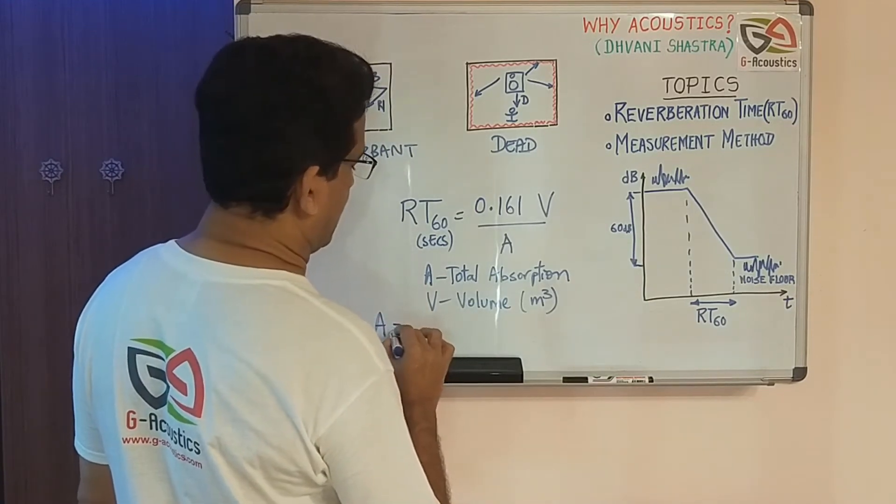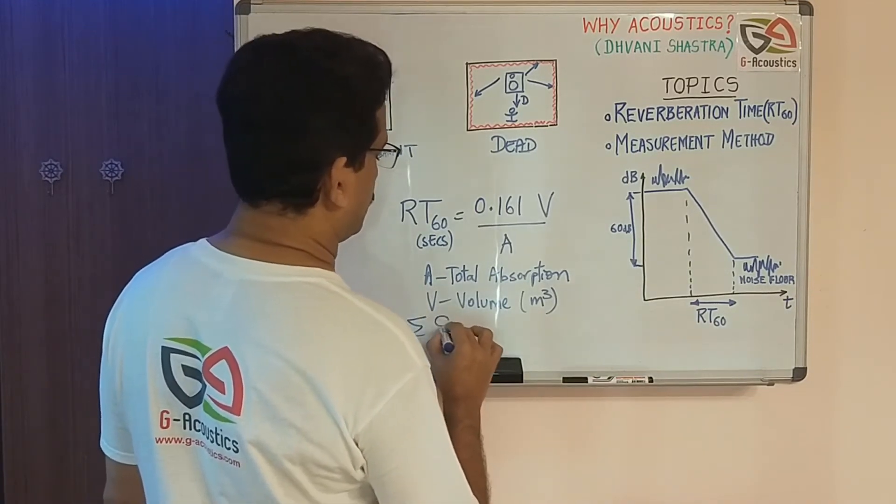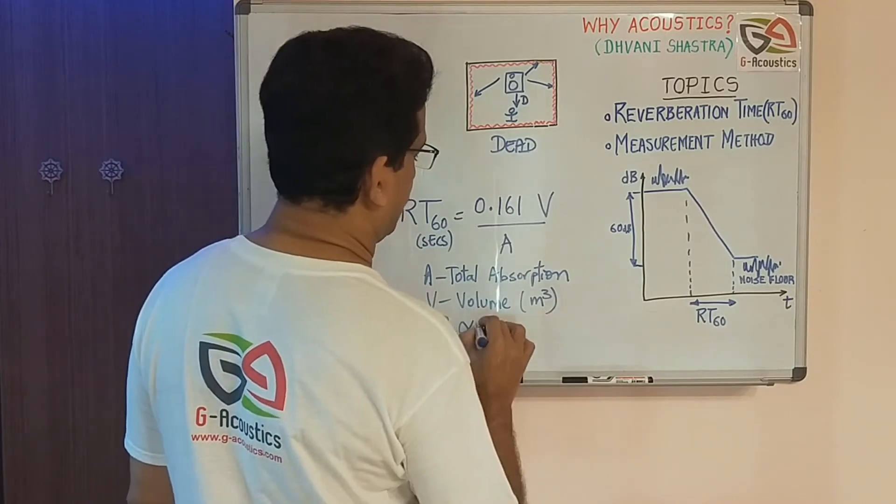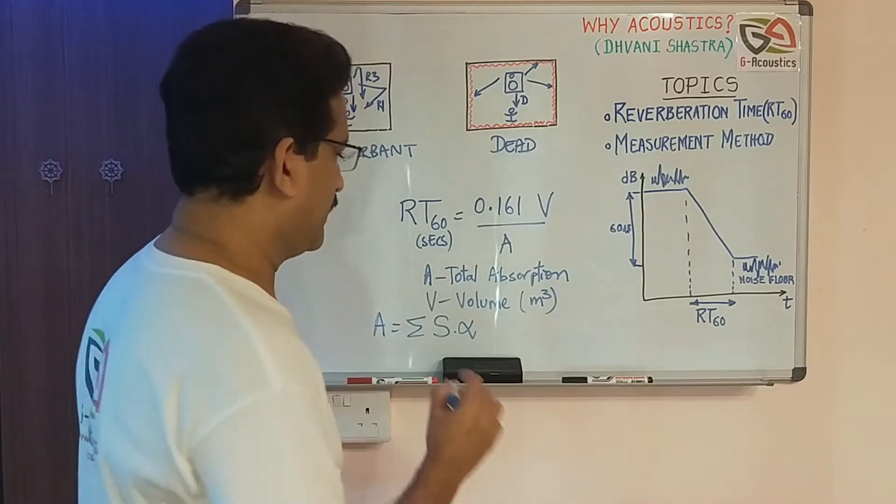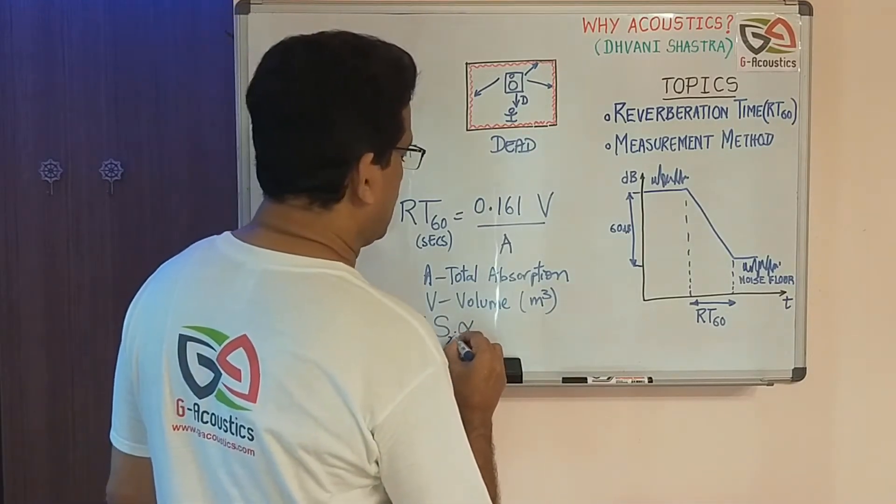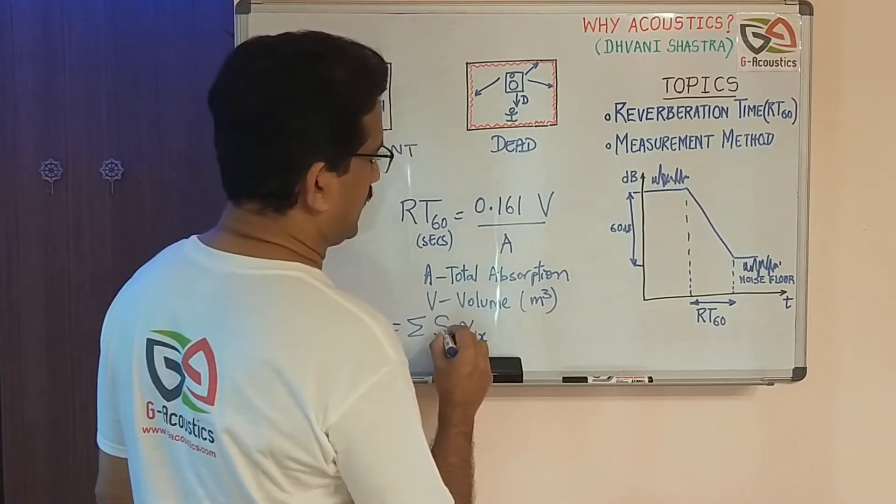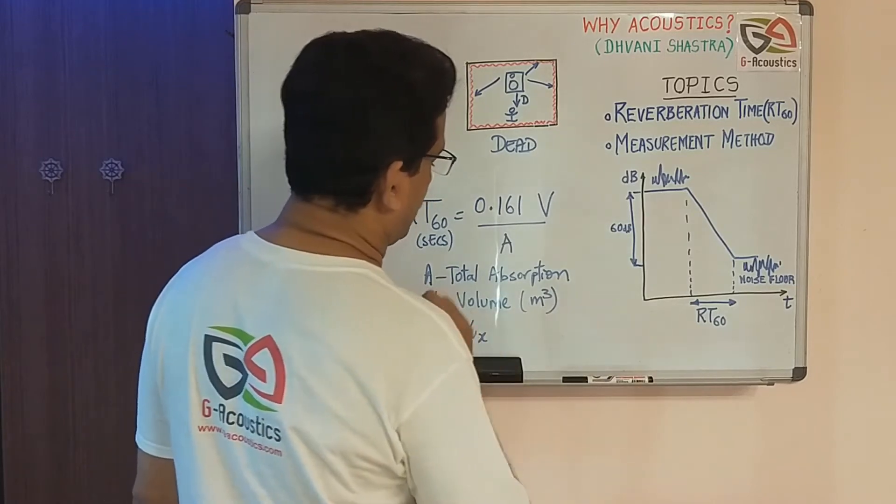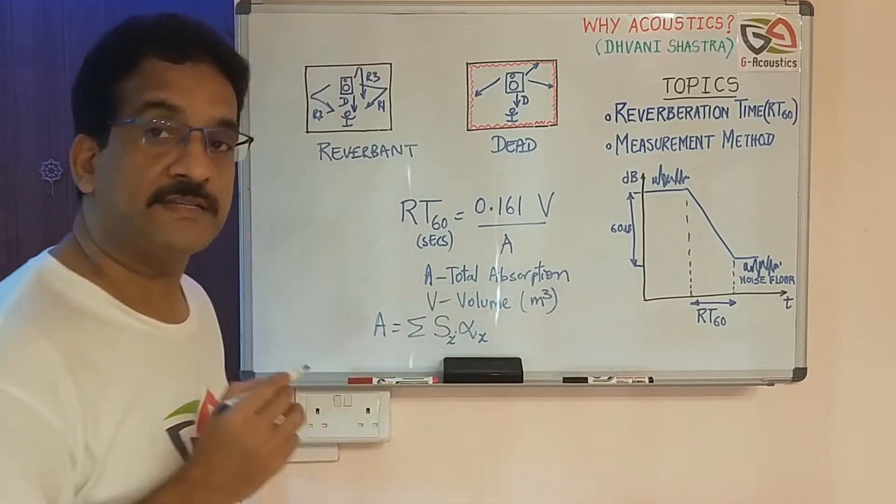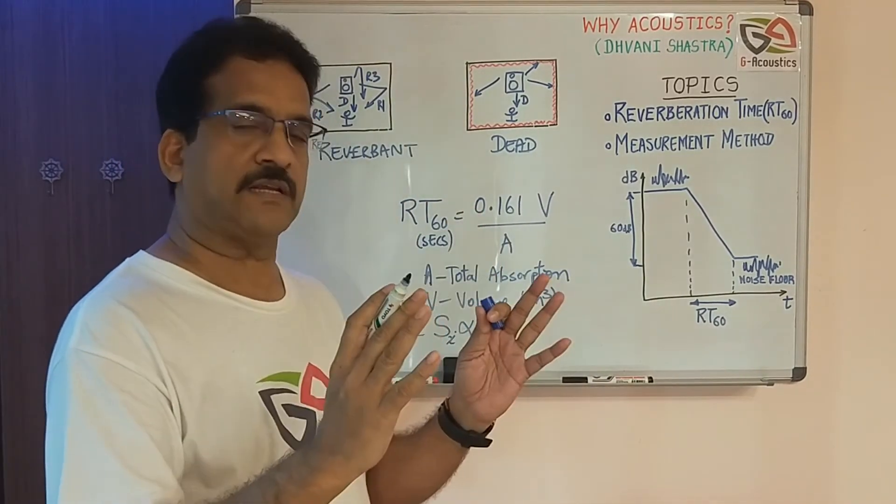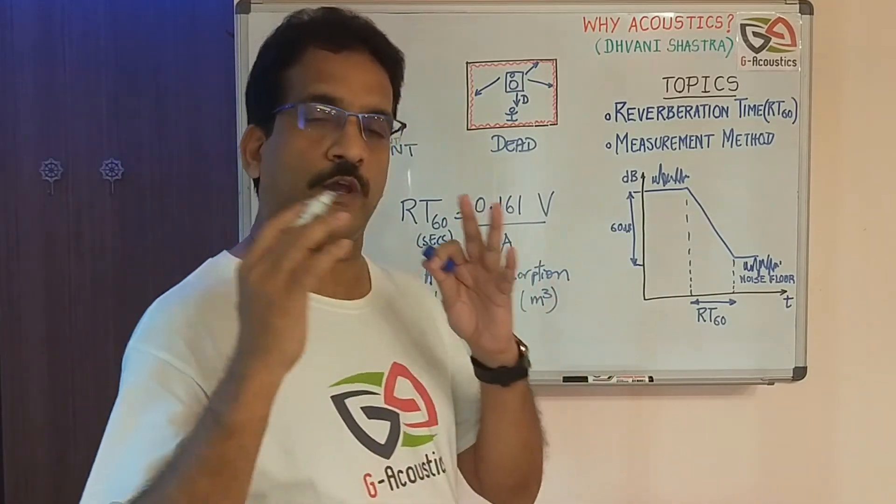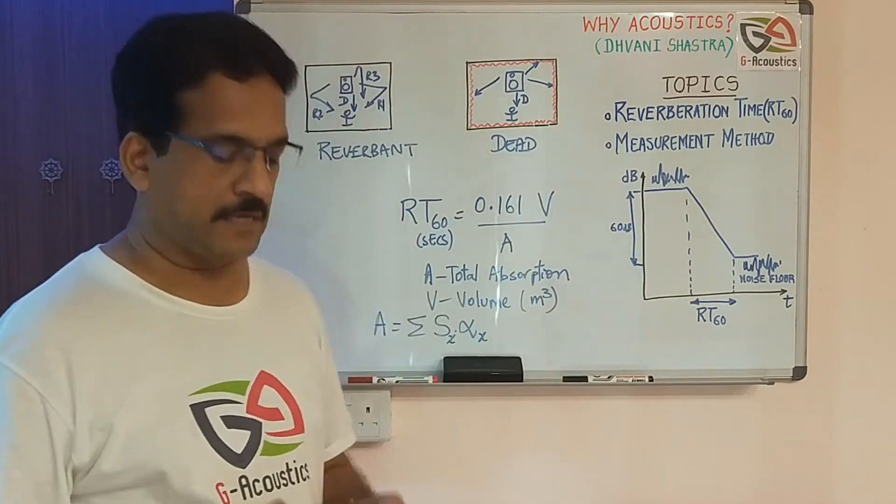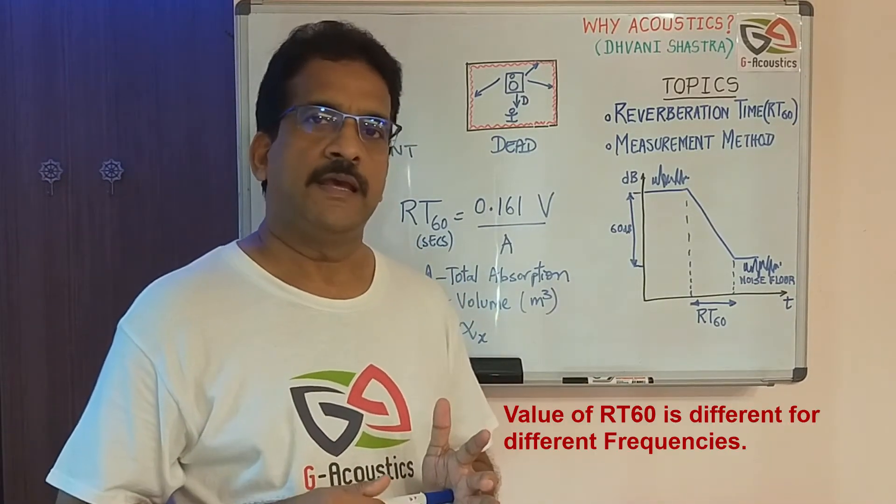In the previous lecture we studied A = sum of Sx × alphax, where S is the surface area of a specific material and alpha is the absorption coefficient of that particular material.